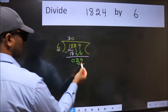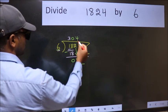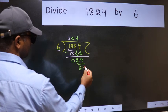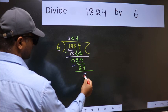So 24. When do we get 24 in the 6 table? 6 fours 24. Now we subtract. We get 0.